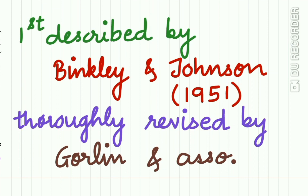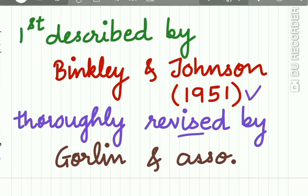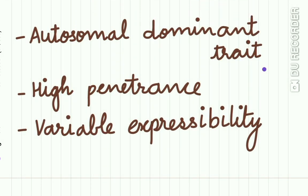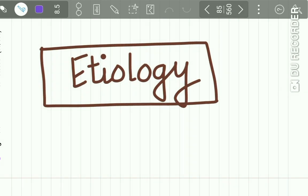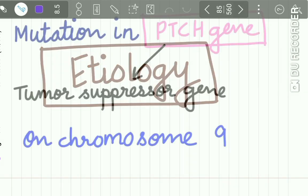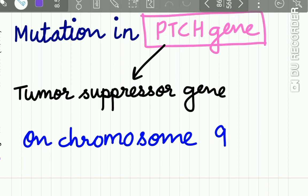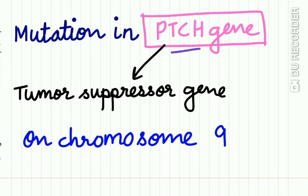Gorlin-Goltz syndrome was first described by Binkley and Johnson in the year 1951, but it was thoroughly revised by Gorlin and his associates. It is an autosomal dominant trait with high penetrance and variable expressibility. It occurs due to mutation of the PTCH gene, which is a tumor suppressor gene present on chromosome 9.